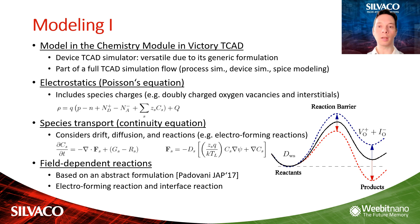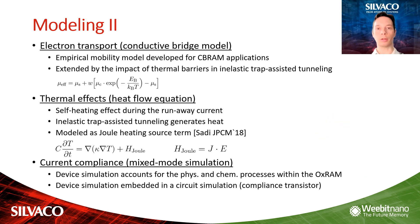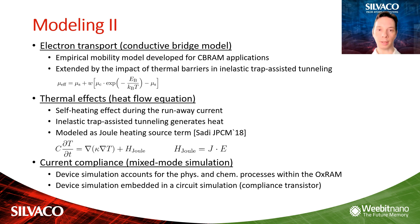Both reactions have a field dependence, which can be explained by a configuration coordinate diagram. According to the applied bias, the energy of the process is raised or lowered, making the forward or reverse reaction dominant. Electron transport through the oxide is due to trap-to-trap tunneling and is described by an empirical conductive bridge model, extended by a temperature-dependent factor for inelastic trap-assisted tunneling. The inelastic tunneling current causes self-heating of the device, ultimately resulting in current runaway, described by the heat flow equation with a Joule heating term.